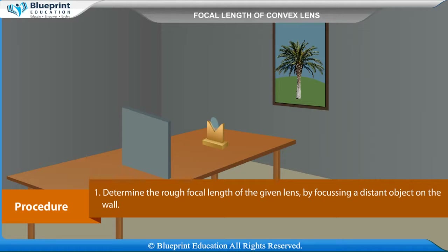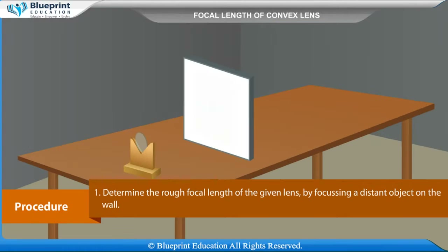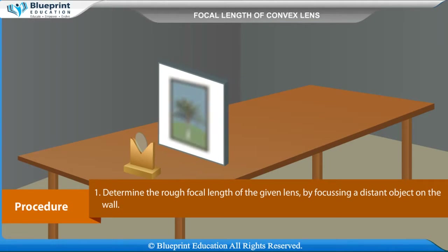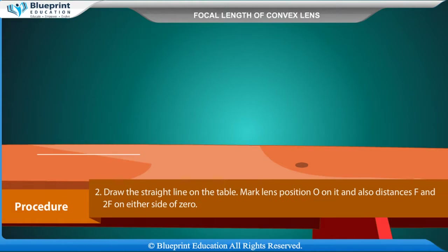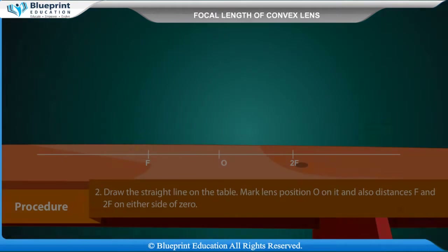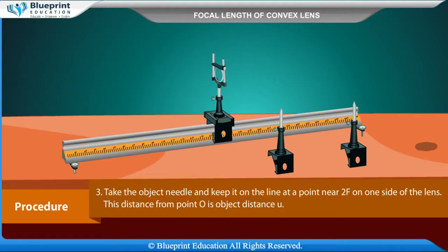Procedure: First, determine the rough focal length of the given lens by focusing a distant object on a wall. Draw a straight line on the table, mark the lens position O on it, and also mark distances F and 2F on either side of O. Take the object needle and place it on the line near F on one side of the lens. This distance from O is the object distance U.